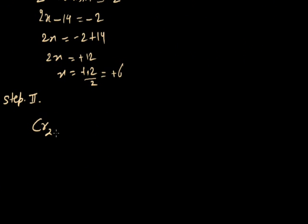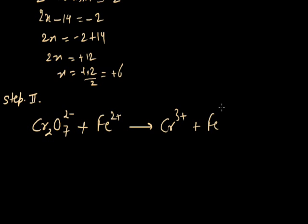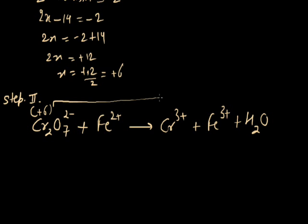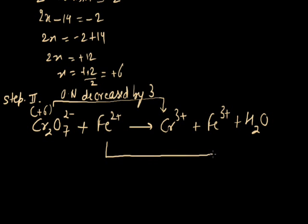We write the equation: Cr₂O₇²⁻ plus Fe²⁺ converts into Cr³⁺ plus Fe³⁺ plus H₂O. Before the reaction, the oxidation number of chromium is plus 6; after the reaction it is plus 3. So there is a decrease in oxidation number of chromium by 3. For iron, before the reaction the oxidation number is plus 2, and after the reaction it is plus 3. So the oxidation number of iron increases by 1.